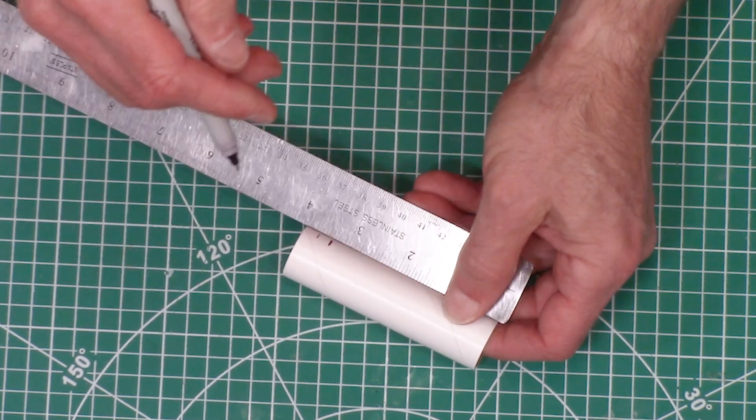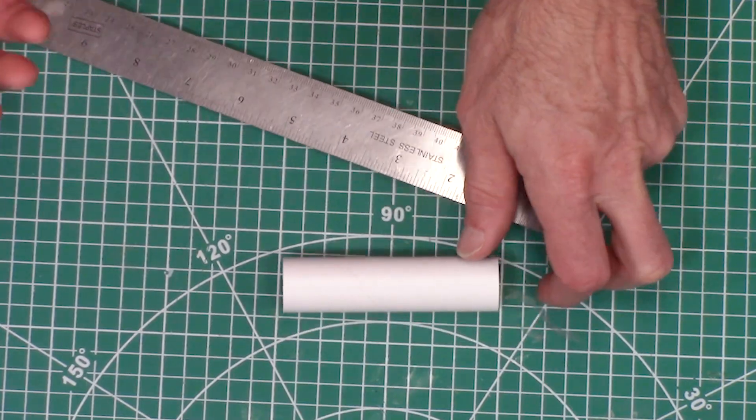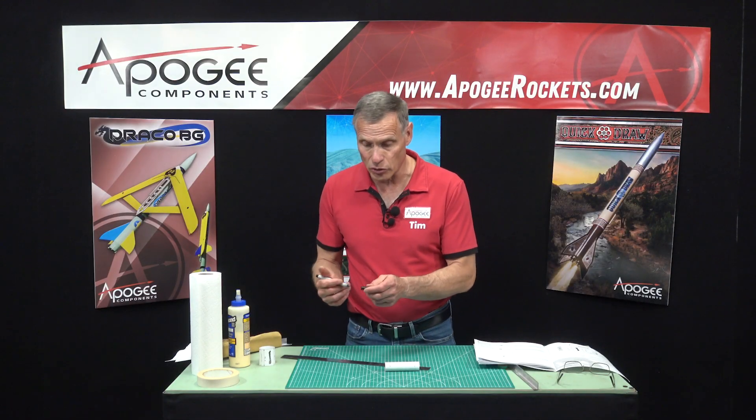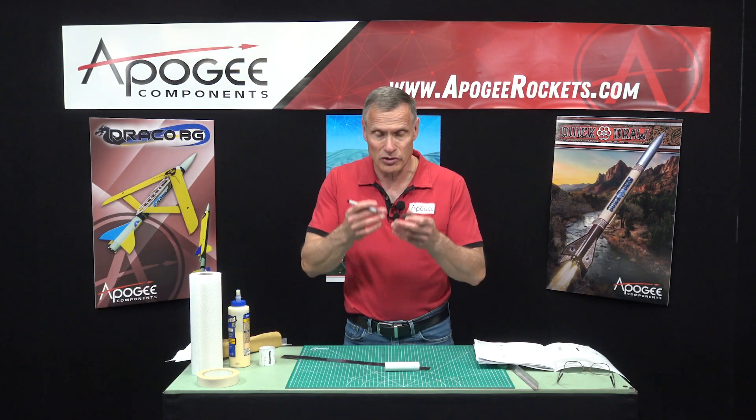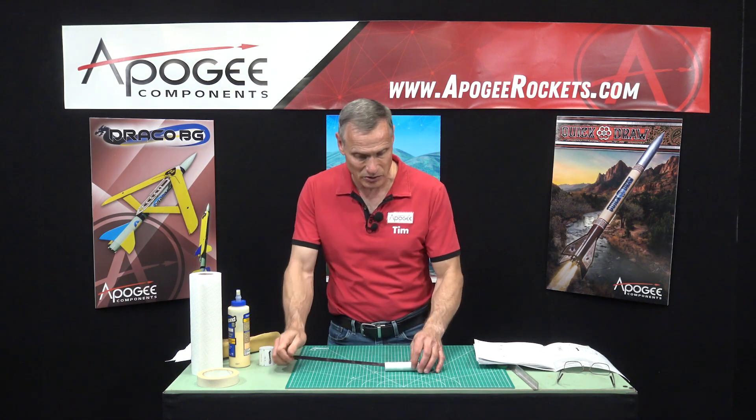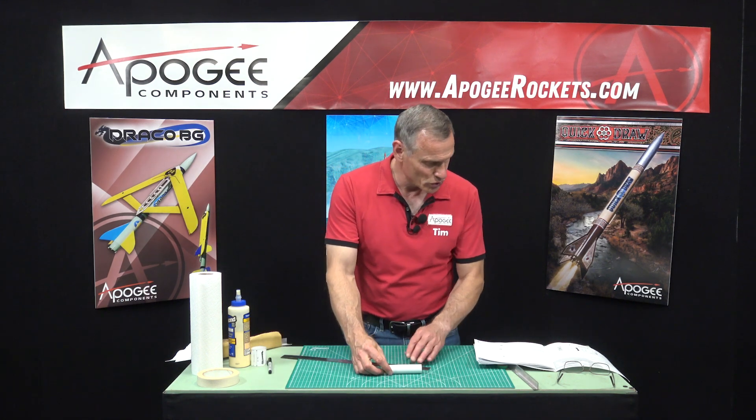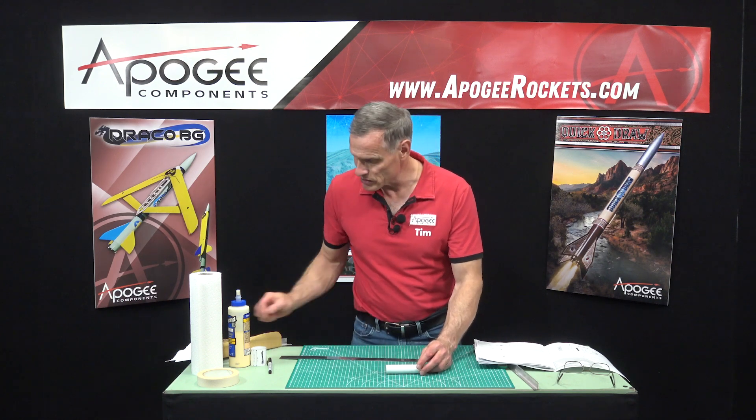Sometimes the ink, when it gets dissolved by solvents like in the glue or paint, can float to the surface and we don't want that to happen. So go ahead and use a pencil to do this.